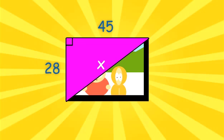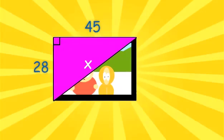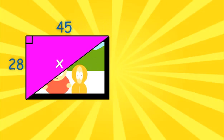I'll start by looking for the hypotenuse. I'll look across the 90 degree angle, and there it is. X is the hypotenuse. These two sides must be my legs. So I'll write 28 squared plus 45 squared equals X squared.